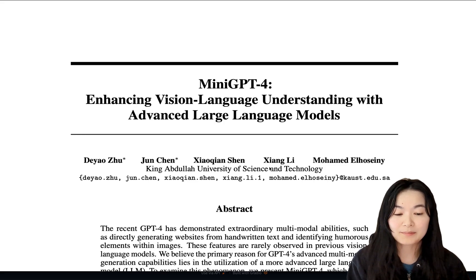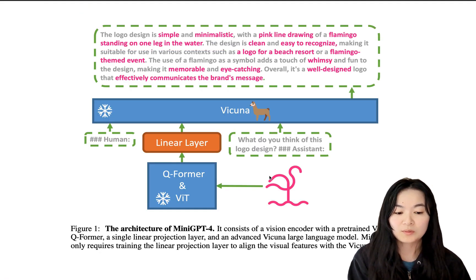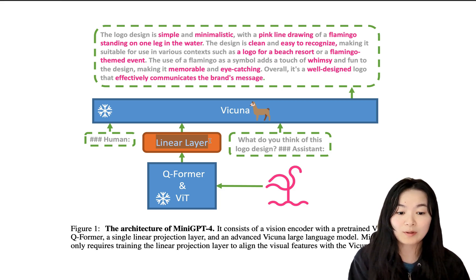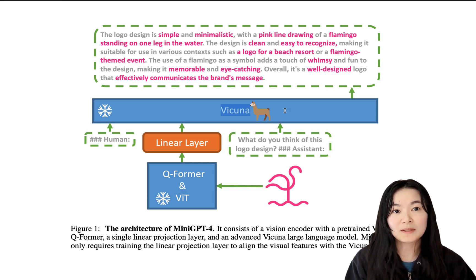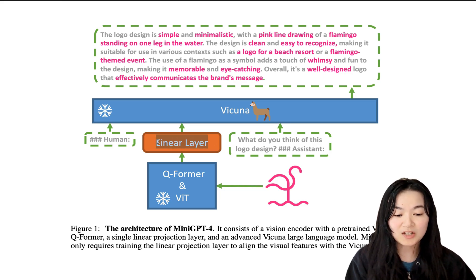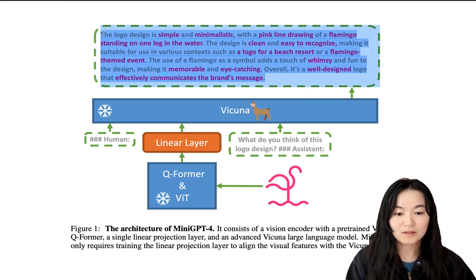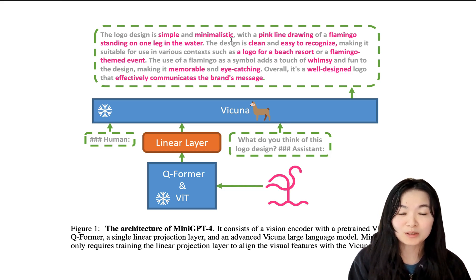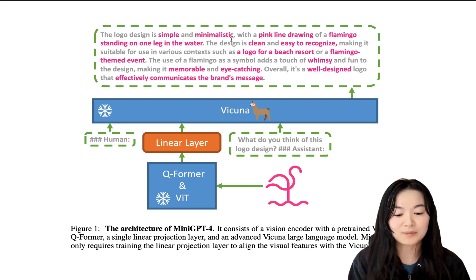Now let's take a look at the MiniGPT-4 paper and see exactly how this model is made. Here is the underlying architecture: we have an image that feeds into pre-trained visual model components, then a single linear projection layer that projects the visual model features to the language model. The language model here is Vicuna, which is also open source. It accepts the prompt format: 'Human', the output of the linear projection layer, the question, and then 'Assistant' produces the output.